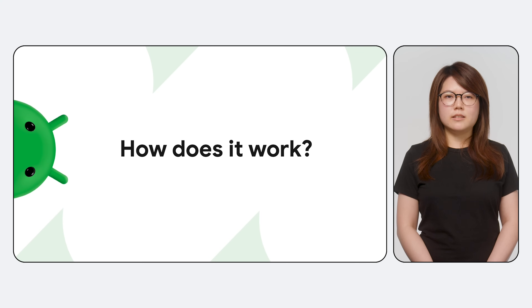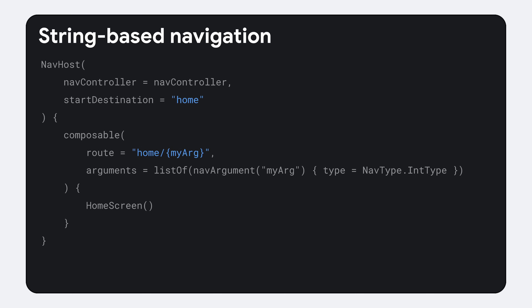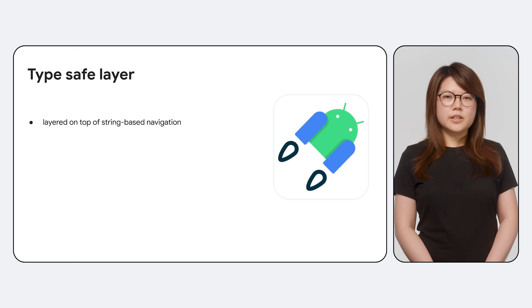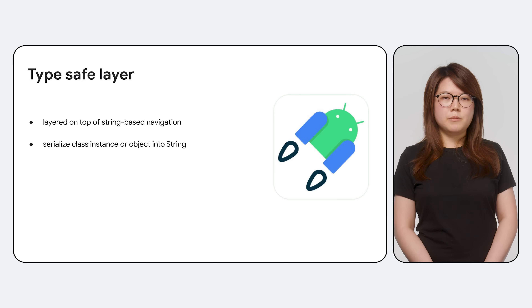So how does serialization help with type safety? As discussed earlier, navigation in Kotlin DSL is built upon string routes and URLs. You'll recall that you defined destinations with a URL as the route, and destination routes are also used to navigate around the app. The new type safe solution is a new layer added on top of the string-based navigation system. It takes a Kotlin class instance or object — in particular its fully qualified name and fields — and then internally serializes it into a string.